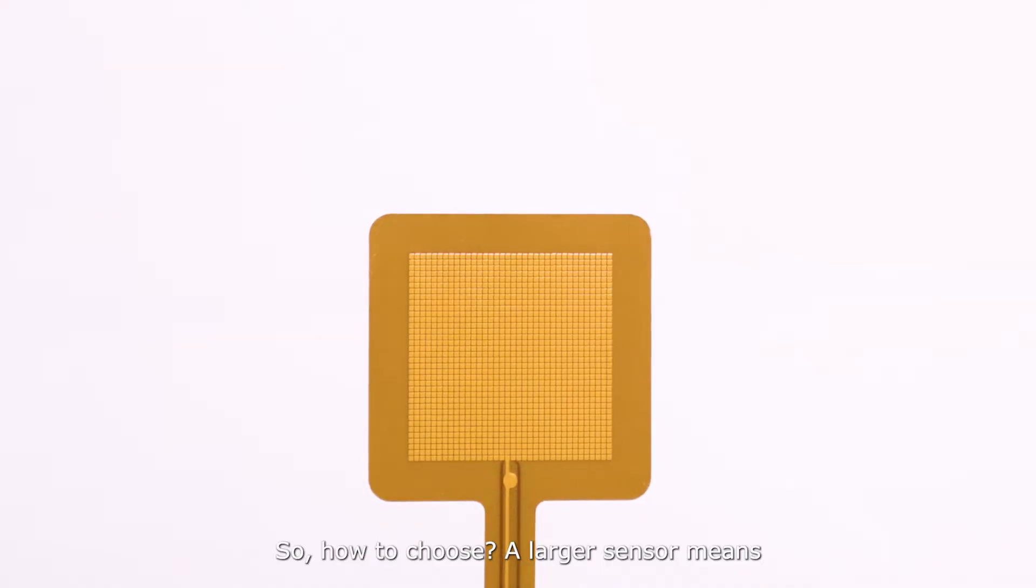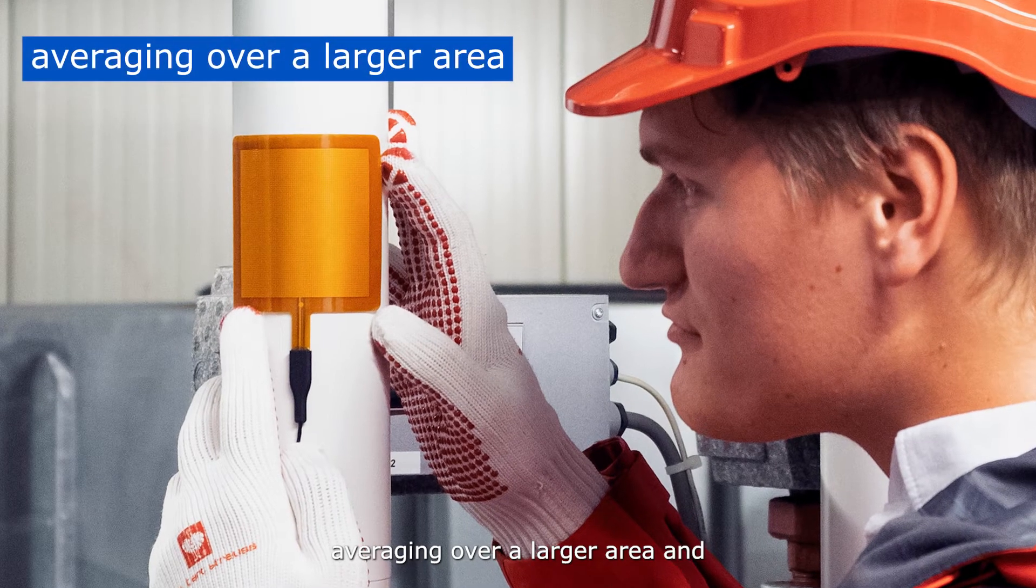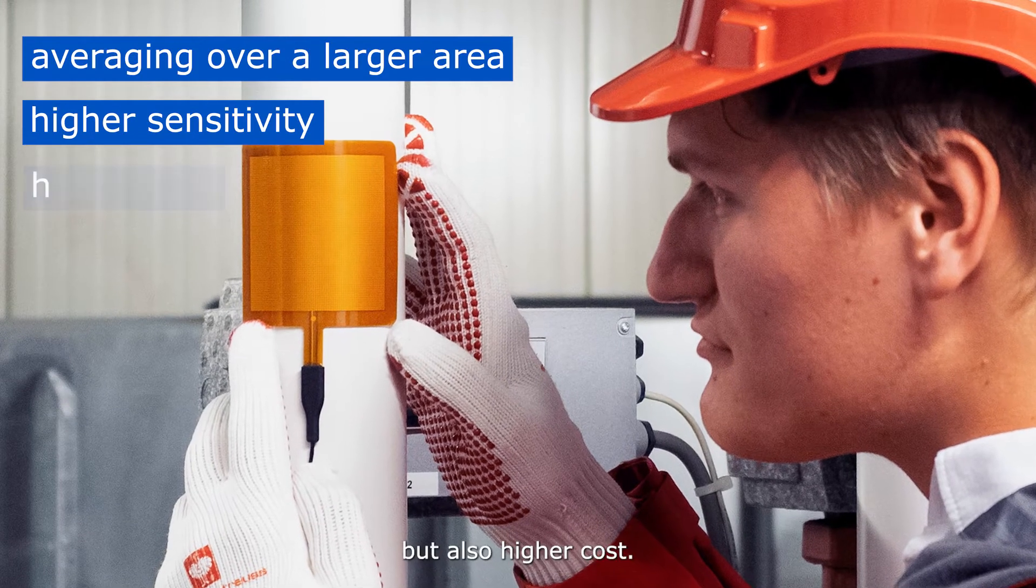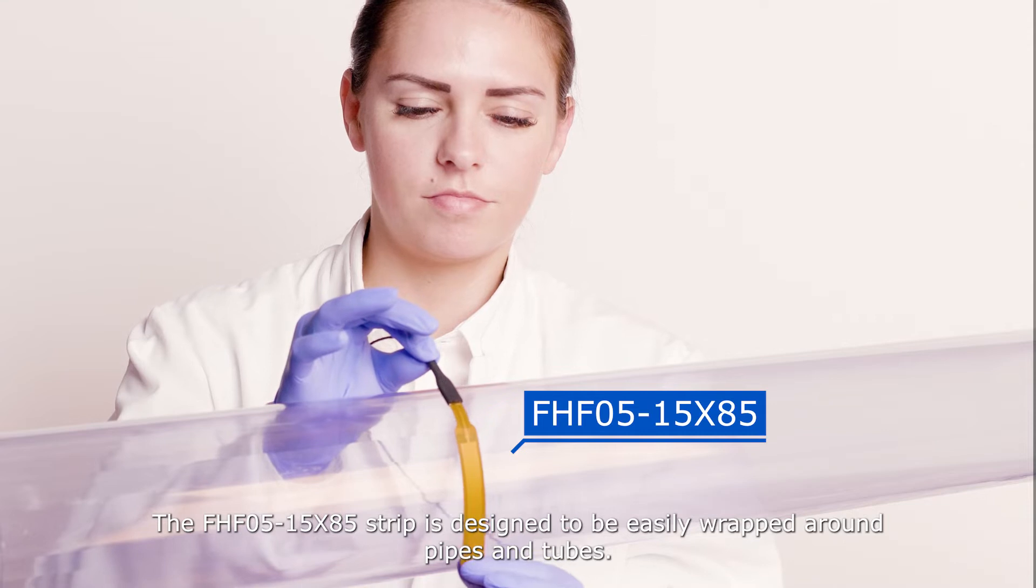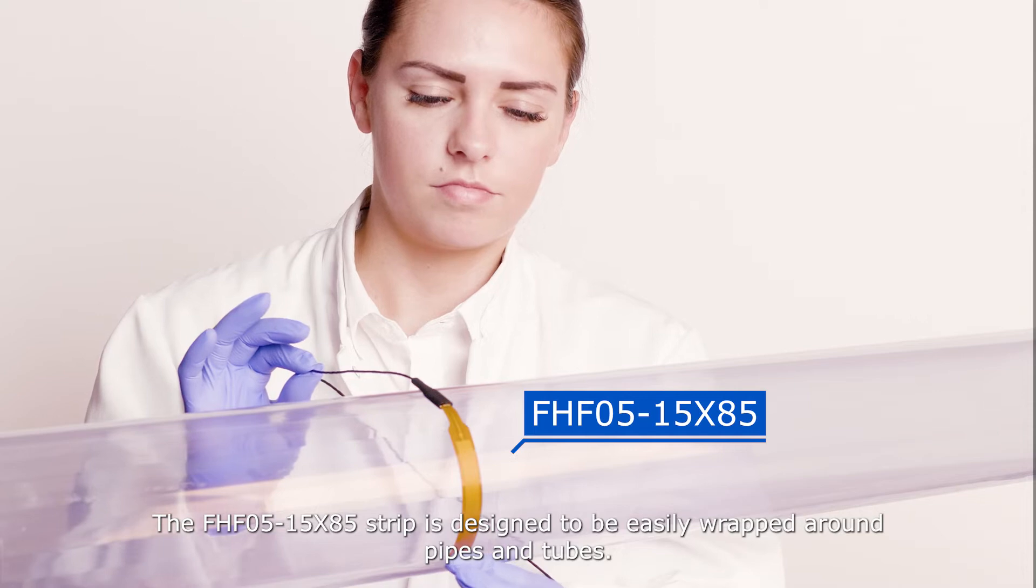So, how to choose? A larger sensor means averaging over a larger area and higher sensitivity, but also higher cost. The FHF05 15x85 strip is designed to be easily wrapped around pipes and tubes.